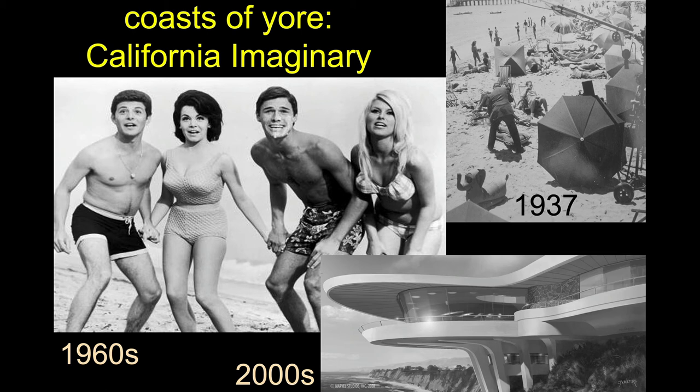It starts in our immediate coastal zone but really gets going in the 1960s with the Gidget movies and the surfing culture evolution — and the spread of the modern surfing culture. That 'Gidget goes to the beach' type of stuff was absolutely part of the modern coastal imaginary.